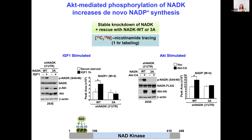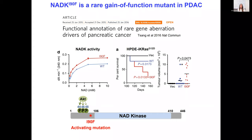For NADK, this is not an on/off switch but more of a tuning mechanism, because the phosphodeficient mutants are not defective at their basal activity — it's just the ability of AKT or IGF-1 to increase NADP biosynthesis that is hindered. Recently, an interesting paper identified an activating mutation of NADK kinase in pancreatic cancer (PDAC): mutation I90F in the N-terminus region of NADK. This mutation increased NADK kinase activity, decreased survival in animals, and increased tumorigenesis.